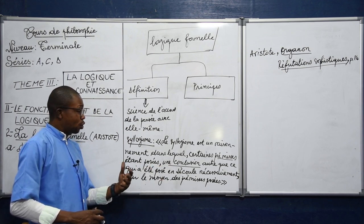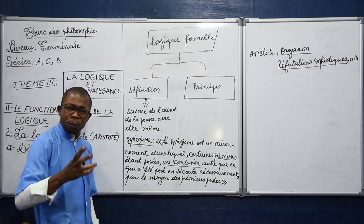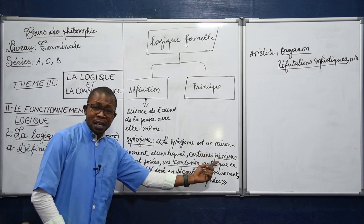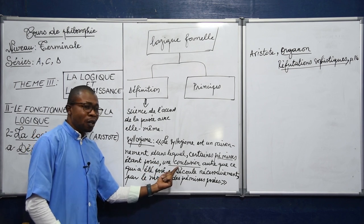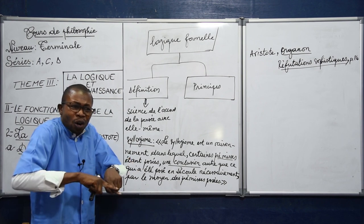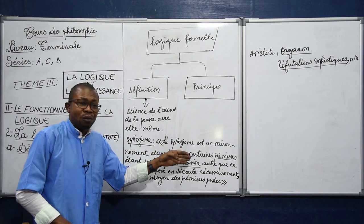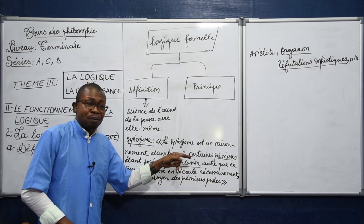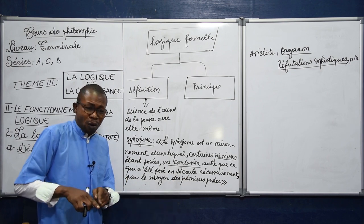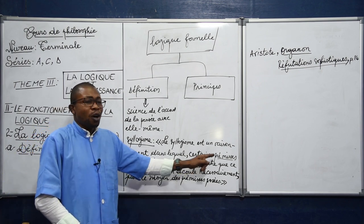Le syllogisme se comprend comme une suite logique de trois propositions dont les deux premières sont appelées les prémisses et la dernière la conclusion, qui découle nécessairement, qui ressort nécessairement de l'accord entre les deux prémisses. La conclusion ne vient pas du néant — elle vient des deux prémisses. S'il n'y a pas de prémisse, on ne peut pas aboutir à une conclusion. La conclusion tire son existence de la relation qui existe entre les deux prémisses.